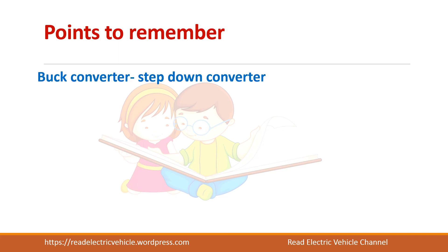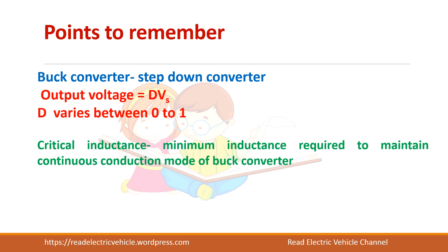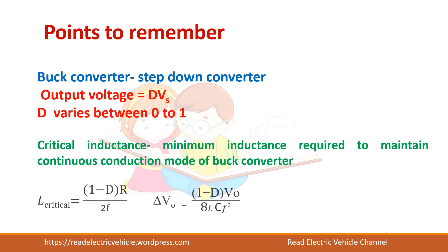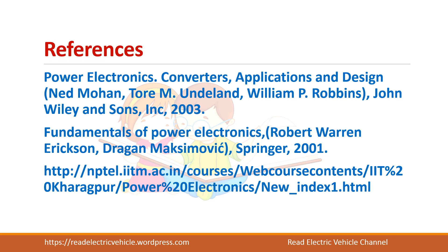Points to remember: the buck converter is a step-down converter, its output voltage is V0 = D × Vs, and D varies between 0 and 1. The critical inductance is the minimum inductance required to maintain continuous conduction mode of the buck converter, and the formulas are given. For study material you can visit the website, and if you like the video, do subscribe to the channel.